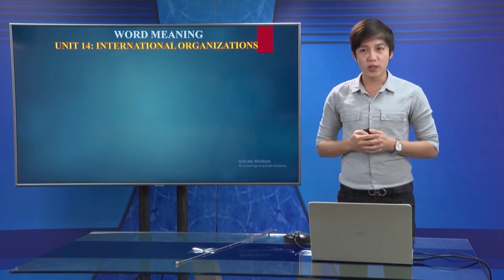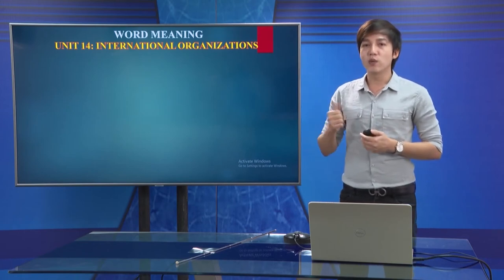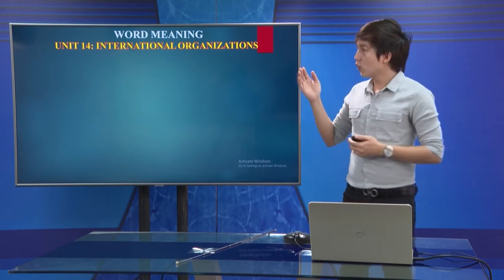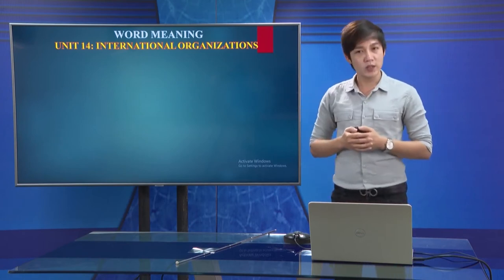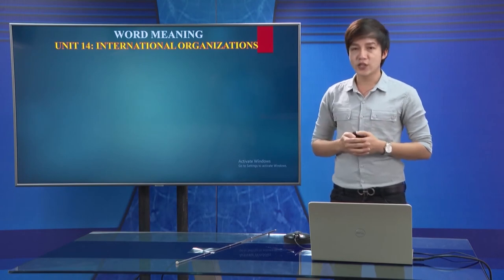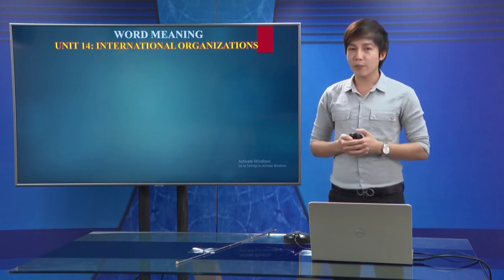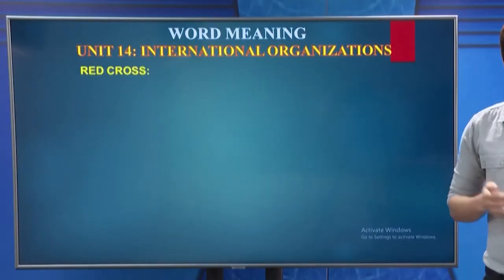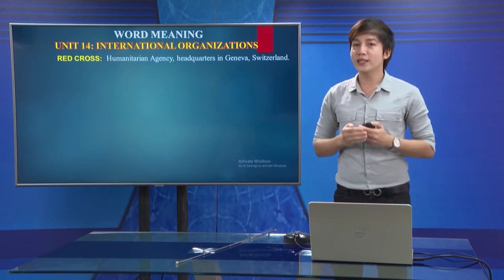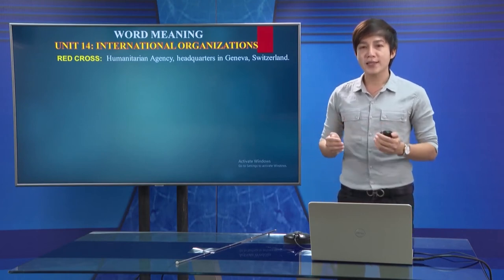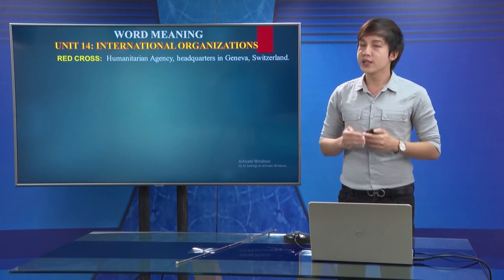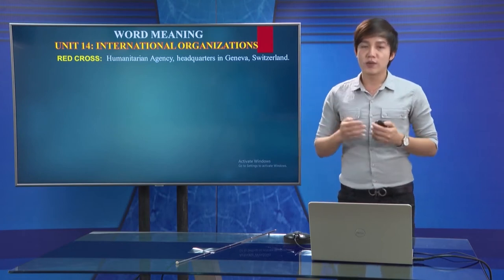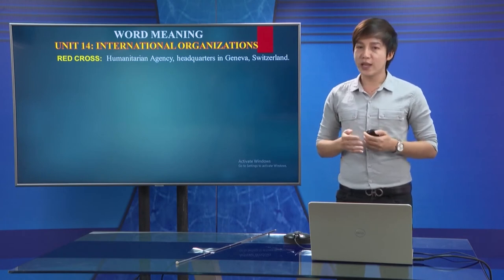Và khi chúng ta đã hiểu được nghĩa của từ rồi thì chúng ta có thể hiểu được từ đồng nghĩa, từ trái nghĩa, định nghĩa của nó cũng như các hình thức từ liên quan. In this section, we will focus on Unit 14 - International Organizations, specifically the Red Cross. We know that the Red Cross is an international humanitarian agency and it has its headquarters in Geneva, Switzerland.